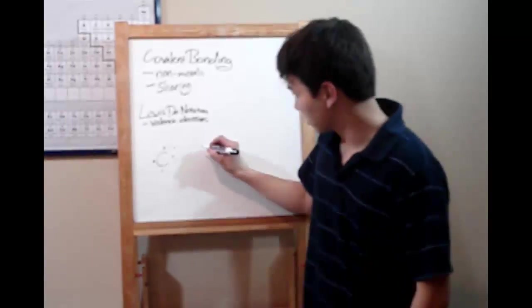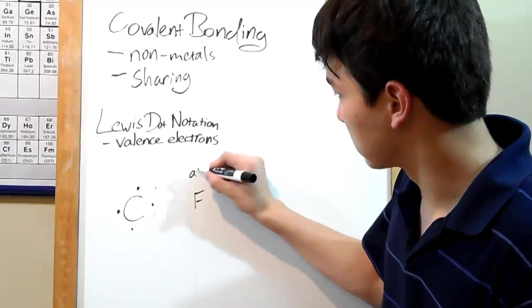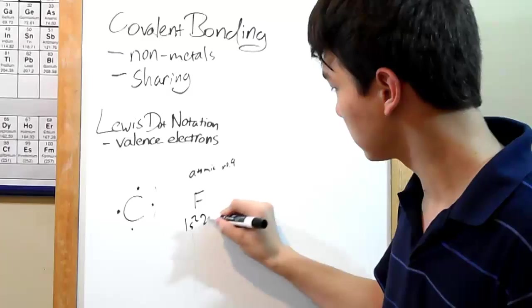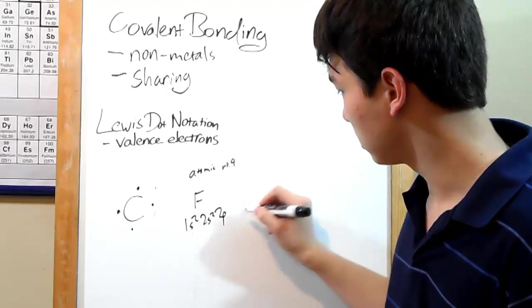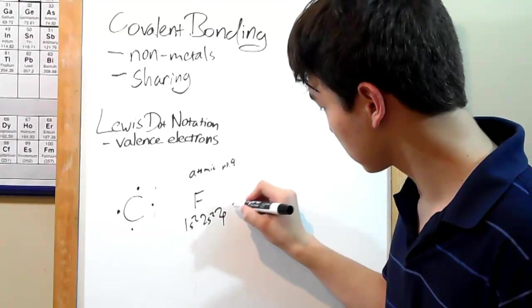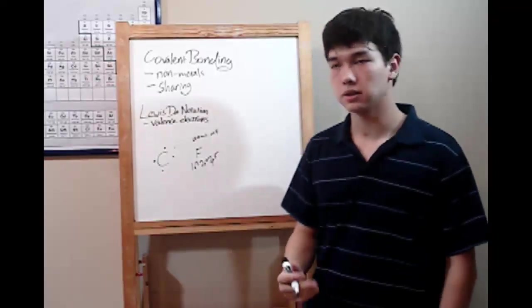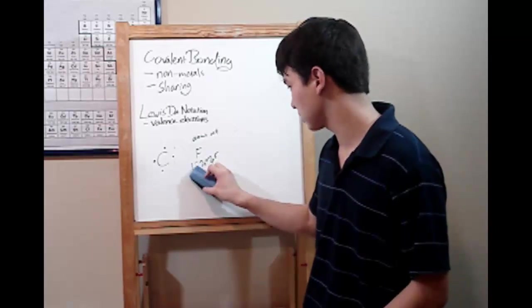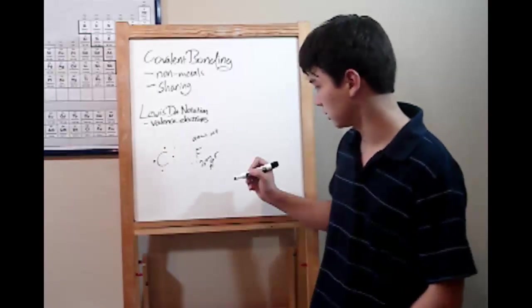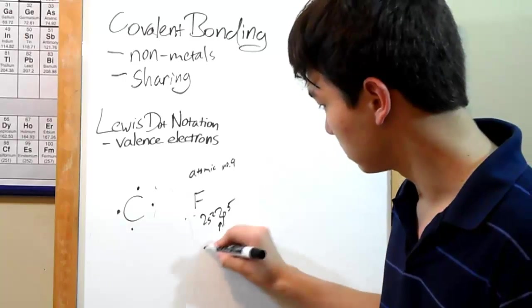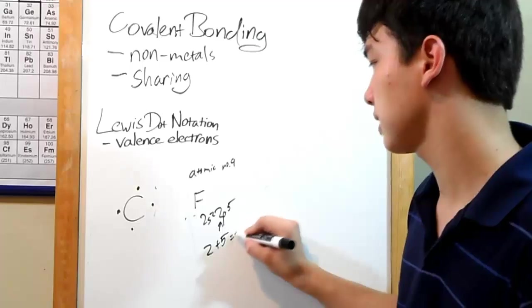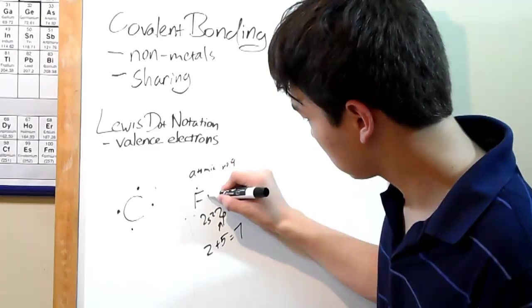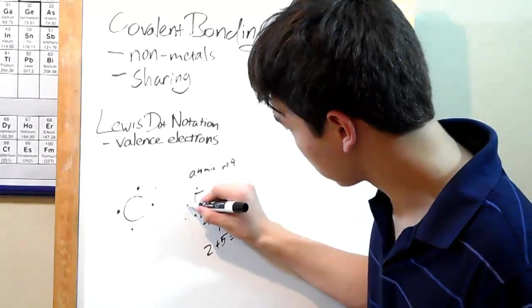Let's do another one. How about fluorine, atomic number 9. Electron configuration: 1s² 2s² 2p⁵. So again, highest energy level, 2. So get rid of everything else. Now focus on the electron numbers, 2 and 5. 2 plus 5, 7. 7 valence electrons.